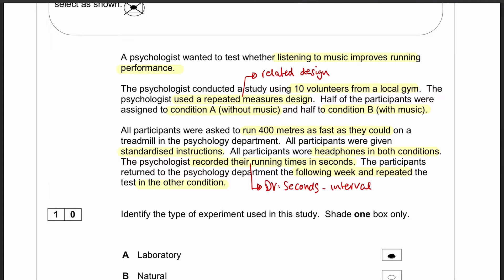highlighted the bits and pieces that I think are going to be useful. You can have a look at that in your own time. Our first question, question number 10, is identify the type of experiment used in this study. The answer to that, you can see straight away, is a lab study. The reason it is a lab study is because the IV is being manipulated in a controlled environment.